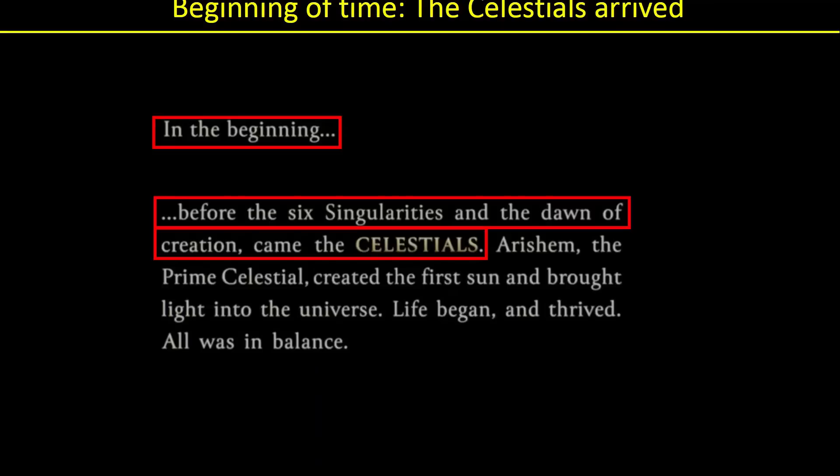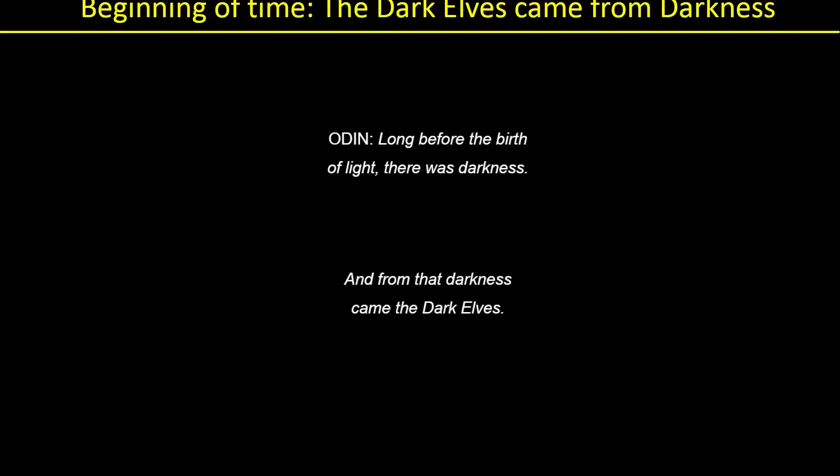The Celestials apparently were not alone, because we learned from Thor: The Dark World that the Dark Elves came around this same time. Odin says, long before the birth of light — i.e. the Big Bang — there was darkness, and from that darkness came the Dark Elves. That is wild. I'd never really put all this together. So before there's even the Big Bang, you've got the Celestials and the Dark Elves, and who created the Dark Elves? Why were they created? Fascinating stuff.